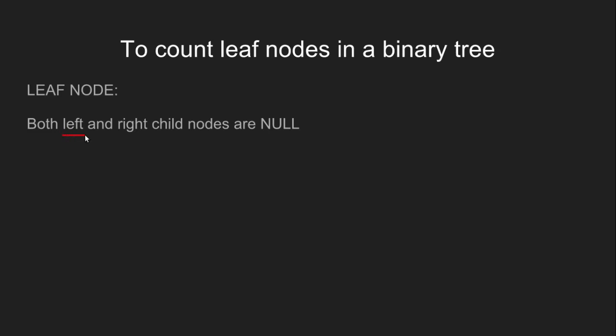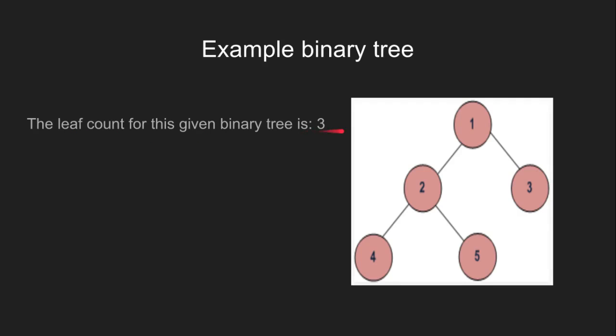A node is a leaf node only when both of its left and right child nodes are null. Let's take an example to be more clear about this. In the given binary tree, we can see several nodes which can be classified as leaf nodes.